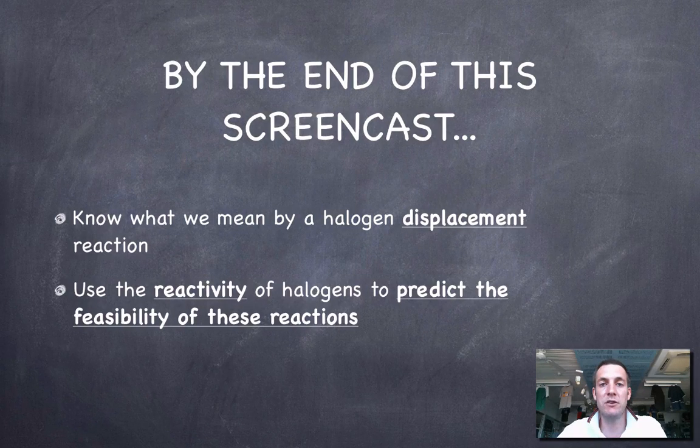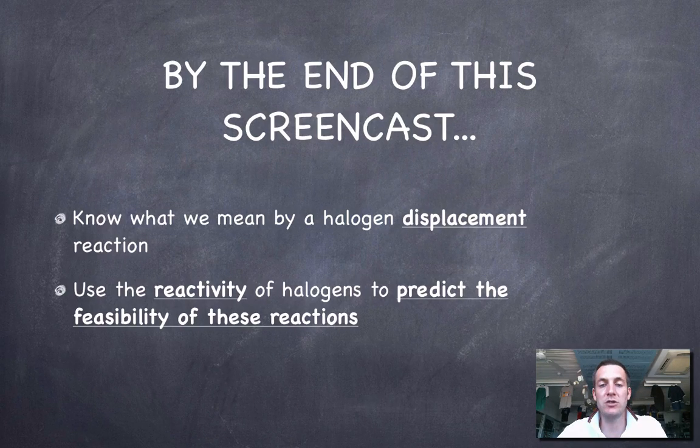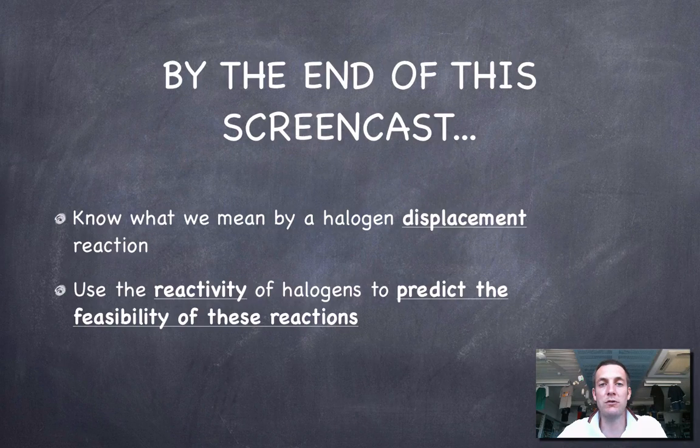So now we're going to introduce a different type of reaction. This is actually a reaction between two halogens, and we're going to try and use the reactivity of halogens to predict whether these reactions will take place. We'll have a look at a few examples so you can understand what a displacement reaction actually is.